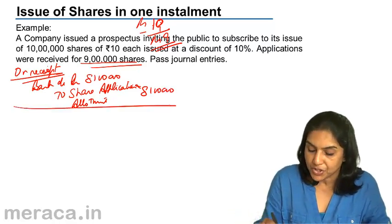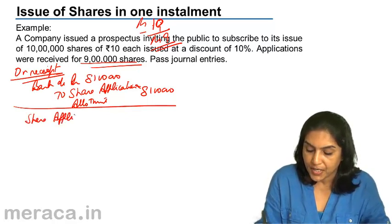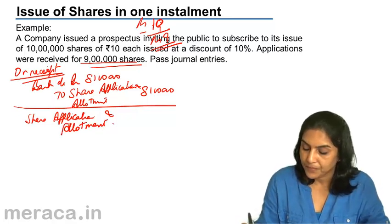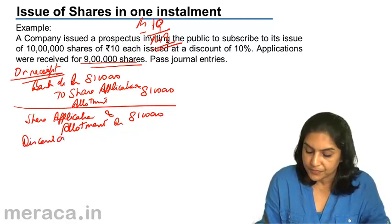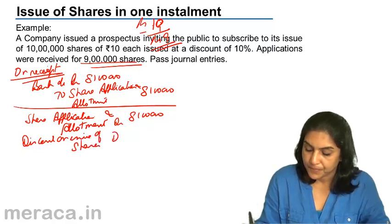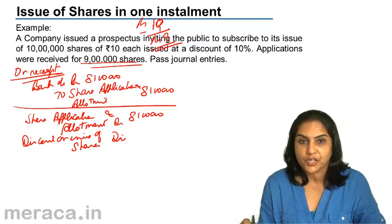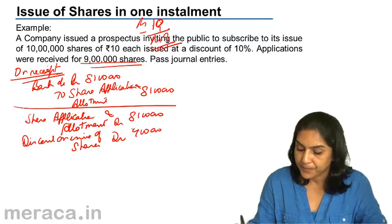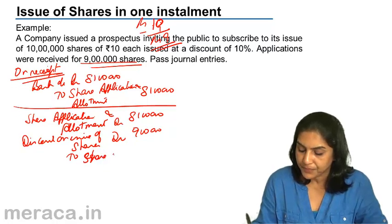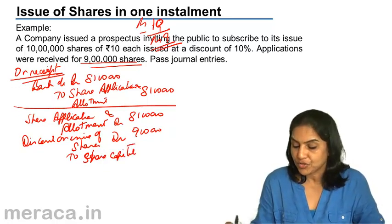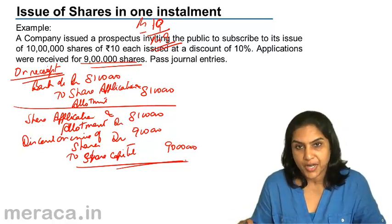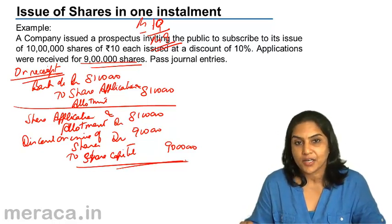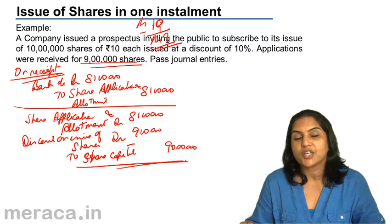On allotment of the shares: share application and allotment is debited. Discount on issue of shares account is debited — rupee 1 per share into 9 lakh shares equals 9 lakh rupees. To equity share capital: 9 lakh into rupees 10 equals 90 lakhs. So the discount account is debited with the discount per share times the number of shares allotted, and share capital is credited with face value per share times the number of shares allotted.